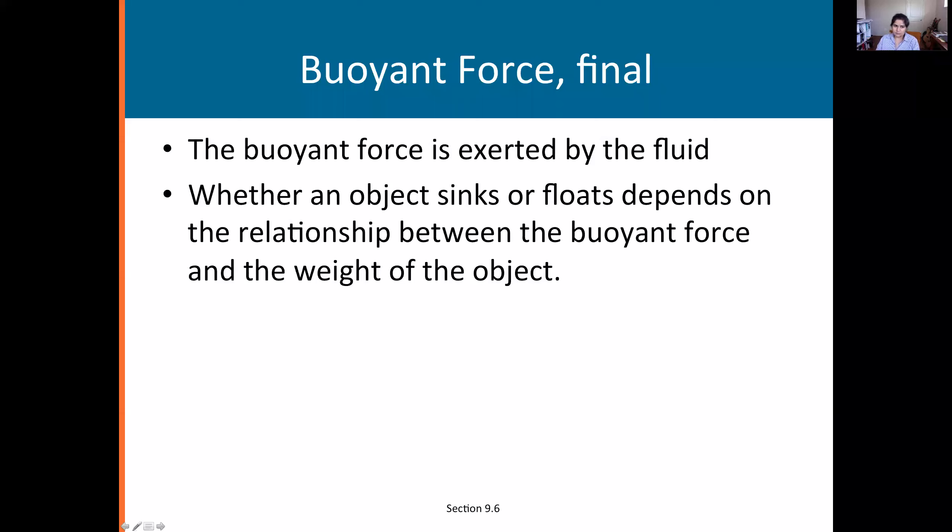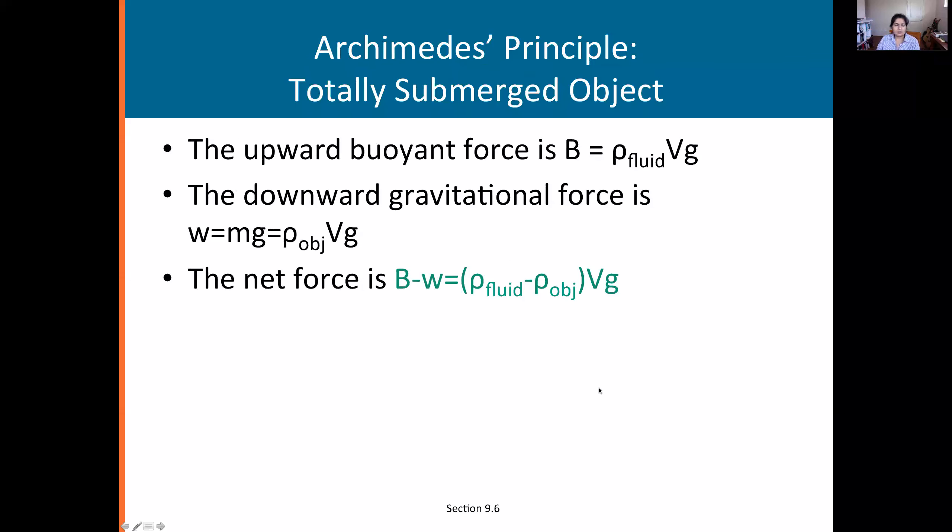Whether an object sinks or floats depends on the relationship between the buoyant force and the weight of the object. The buoyant force is upward, the weight of the object is downward. If the weight is greater, the object is going to sink. If the buoyant force is greater, the object is going to go upwards. Buoyant force minus the weight was ρ·V·g, and the weight is m times g for the object. We have just a difference in fluid density and object densities.